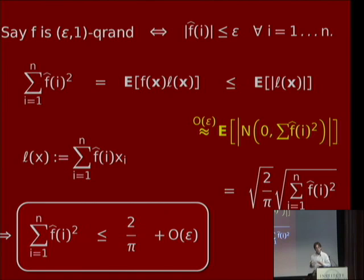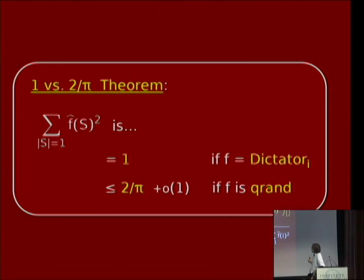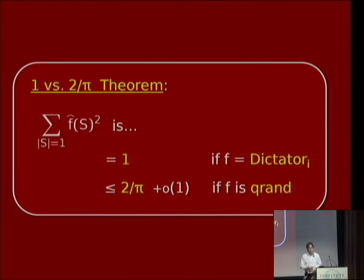That's much different from what we had with dictators, which achieve one. So there's a big gap between these two classes, dictators and quasi-random functions. This also connects to Chang's theorem in arithmetic combinatorics. What we've just accomplished is what I'll call the 1 versus 2/π theorem: the sum of squares of degree-1 Fourier coefficients of a Boolean function is 1 if f is a dictator, but at most 2/π if f is quasi-random. That's all I want to say for now about quasi-random functions.